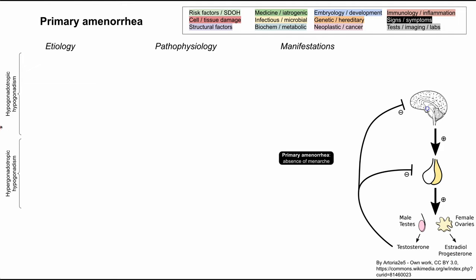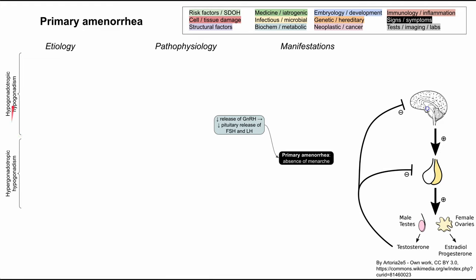The first two etiologies for primary amenorrhea are hypogonadotropic hypogonadism and hypergonadotropic hypogonadism. Both are forms of hypogonadism, meaning low hormone secretion from the gonads — low estrogen and low progesterone. The difference is whether they are hypogonadotropic or hypergonadotropic, which refers to the concentrations of GnRH secreted from the hypothalamus. In hypogonadotropic, you have decreased release of GnRH, leading to decreased pituitary release of FSH and LH, resulting in low estrogen and low progesterone and primary amenorrhea.